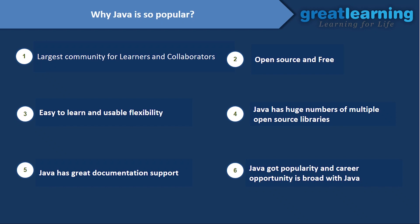Java has a huge number of multiple open-source libraries. For example, if you want to implement a list, queue, or some complicated data structure, you don't need to write from scratch — you can use the Java Collection Framework, where all complicated data structures are already implemented. Java also has great documentation support on its official website. And Java offers great career opportunities, as companies like Google, Uber, and Pinterest use it.